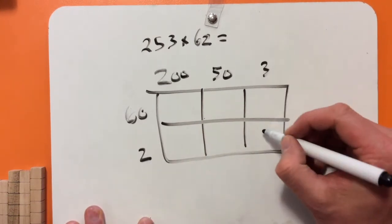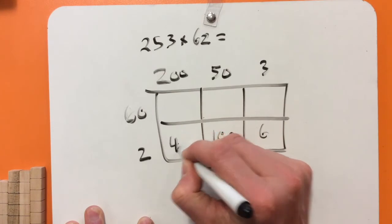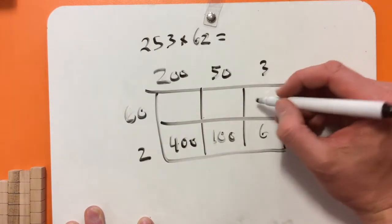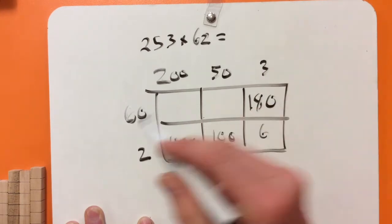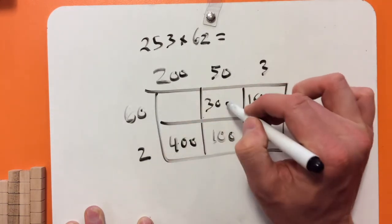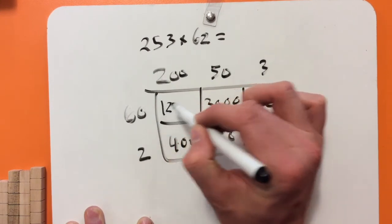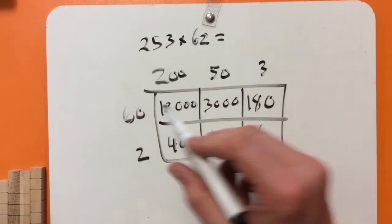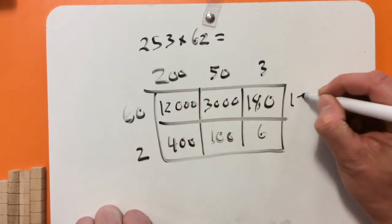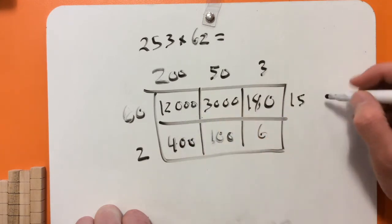So 2 times 3 is pretty easy — 6. 2 times 50 is 100, and 2 times 200 is 400. It gets a little tricky as we move up in these bigger numbers. 60 times 3 — so 6 times 3 is 18, so it will be 180. 6 times 5 is 30, so that will be 3,000. 6 times 2 is 12, and then 3 more zeros, so 12,000. So across the 60-row, I have 12,000 plus 3,000 plus 180 — that's 15,180.